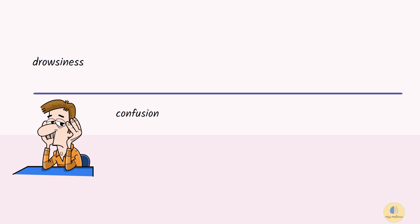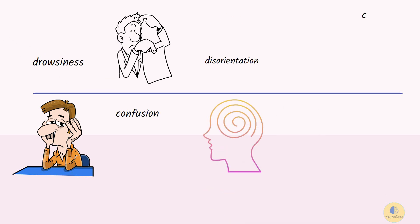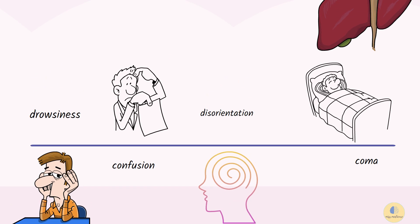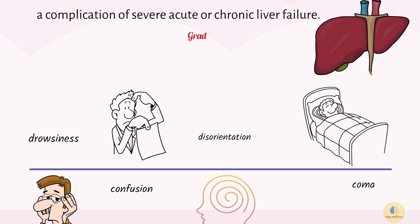The mental state can vary from slight drowsiness, confusion, and disorientation to unresponsive coma with convulsions. There are four grades in the West Haven criteria according to the clinical manifestations: Grade 1, Grade 2, Grade 3, and Grade 4.